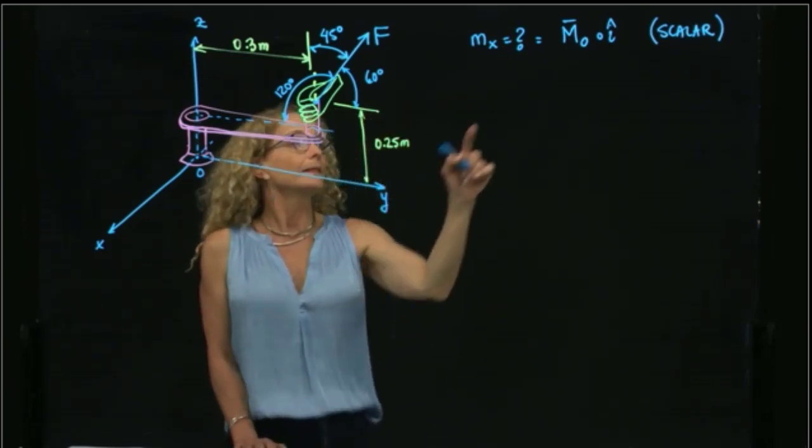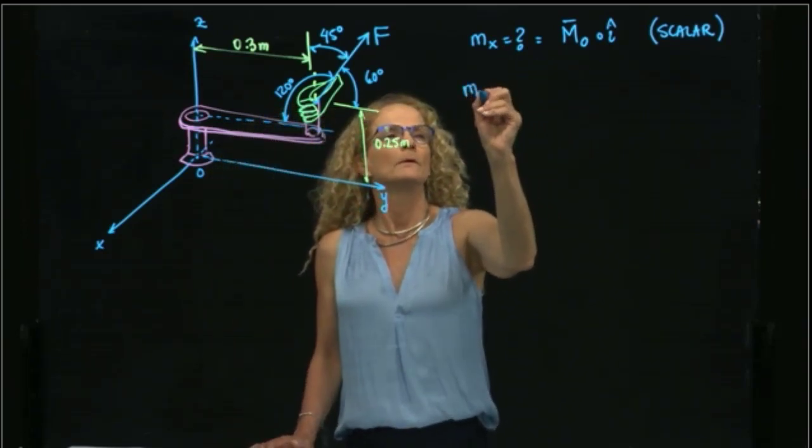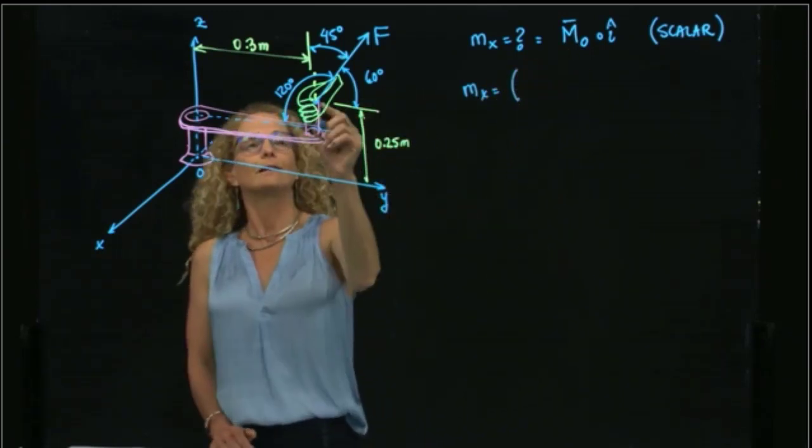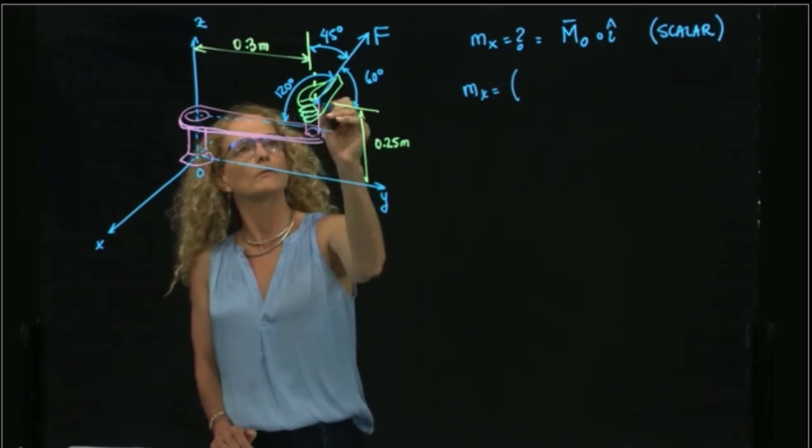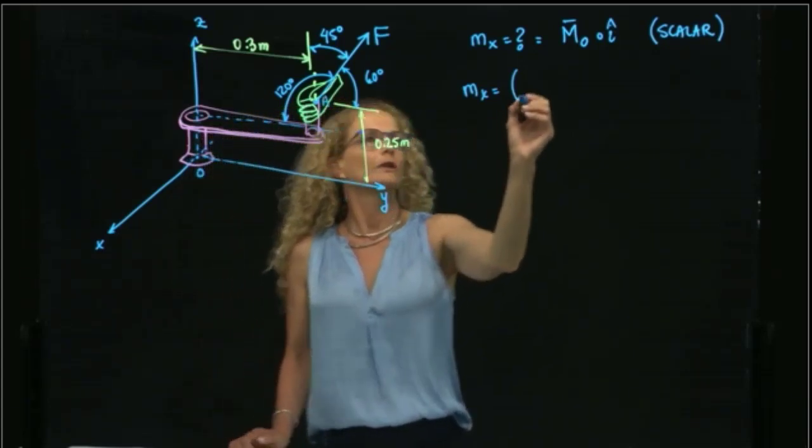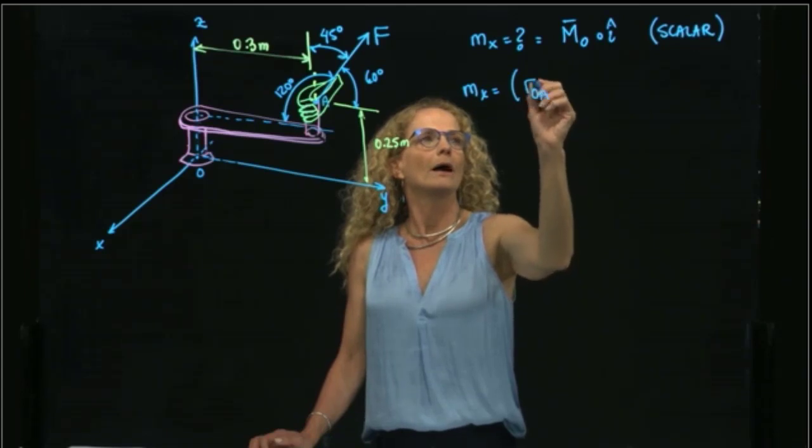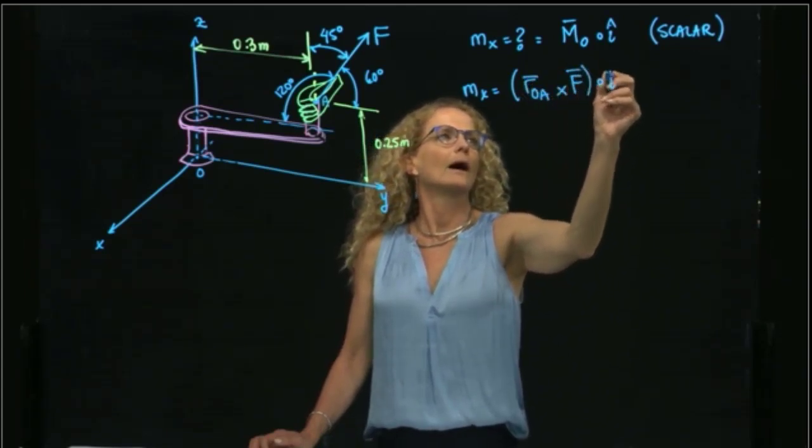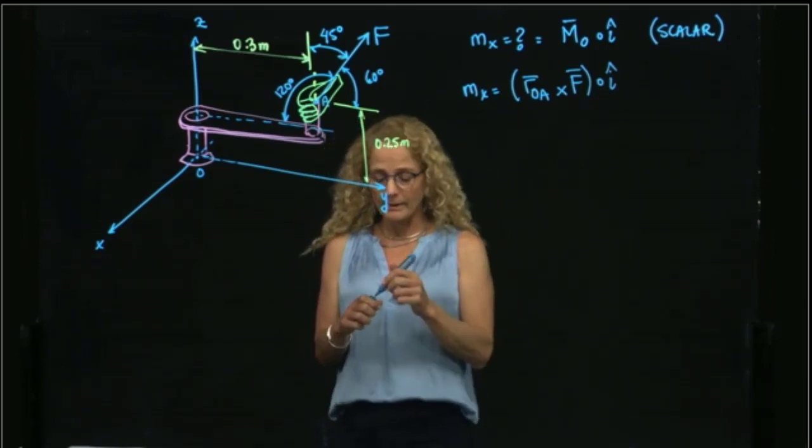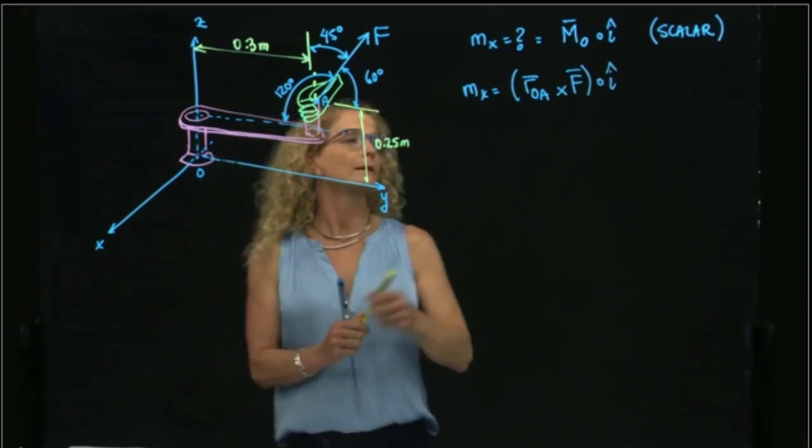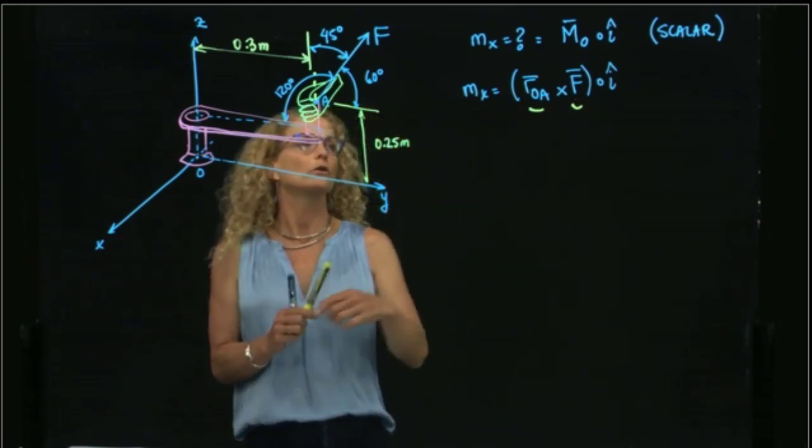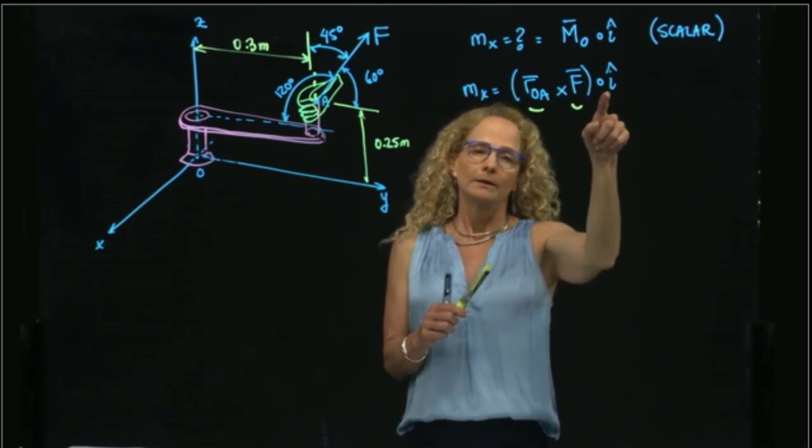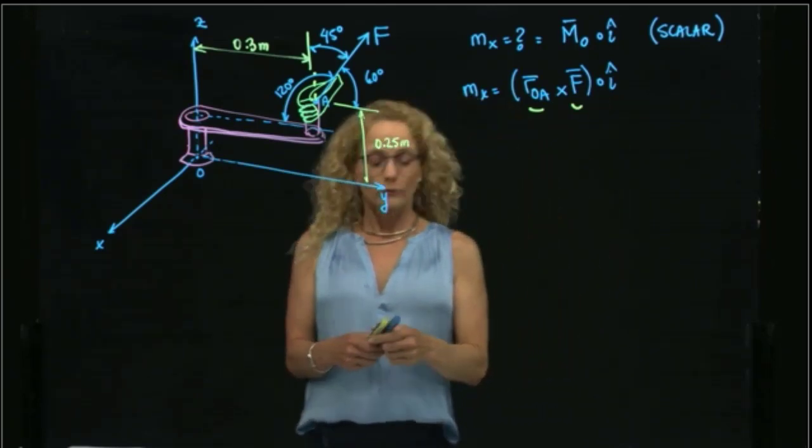And the definition of this moment right here is the distance. This is the point A where the force is located. So the distance between O and A cross the force is scalar I. We need to find this quantity, and we need to find this quantity in order to produce this product, and then multiply scalar by I.